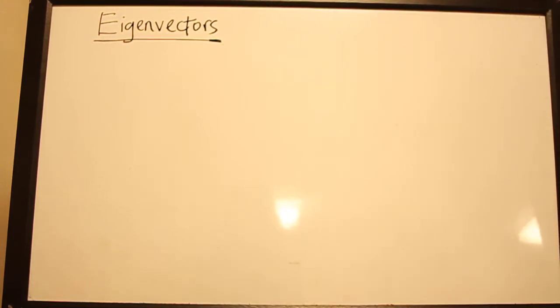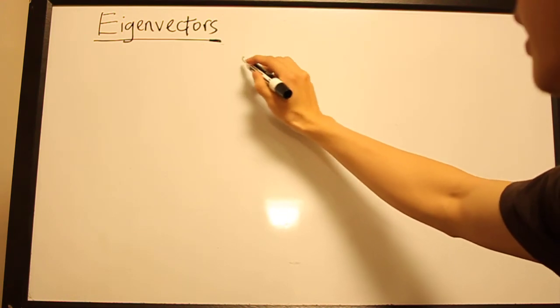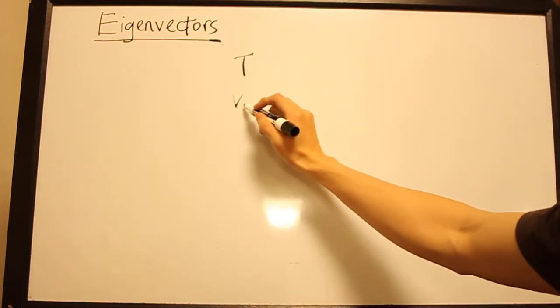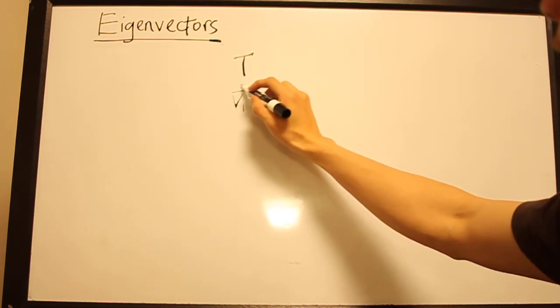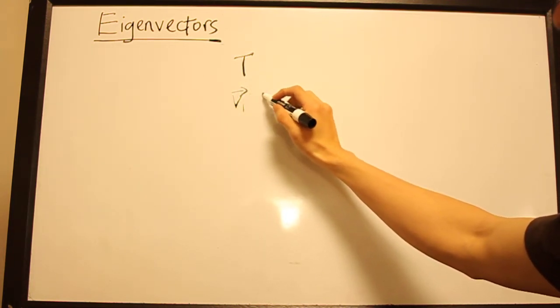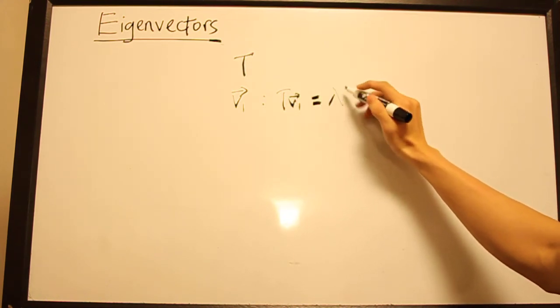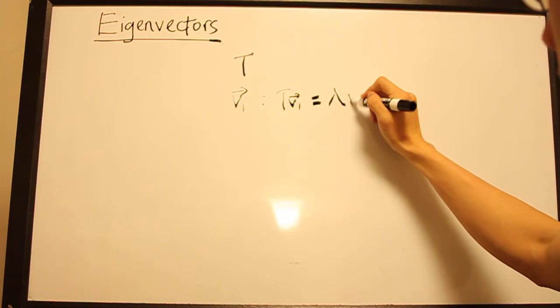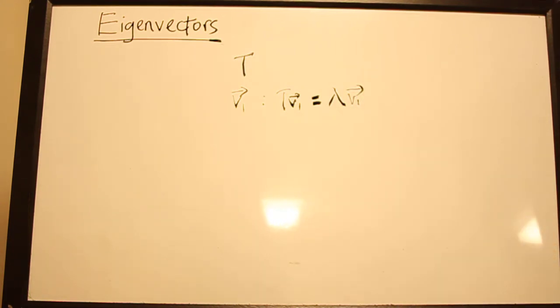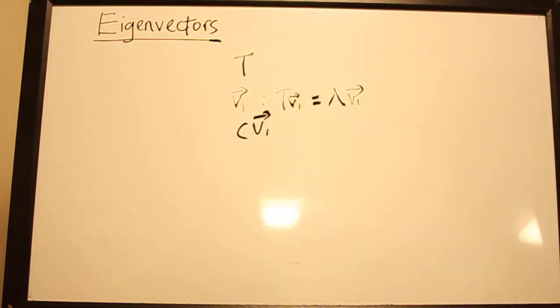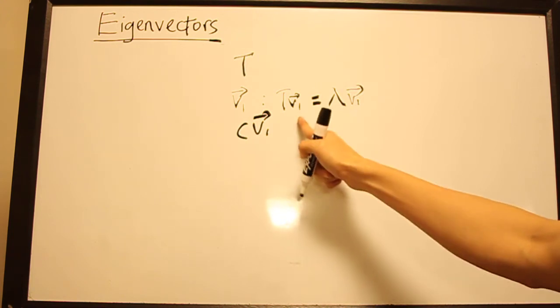So immediately we should be able to think of some properties of eigenvectors. So let's say I have a linear transformation T and I have an eigenvector of T called V₁, an eigenvector of T with eigenvalue lambda.